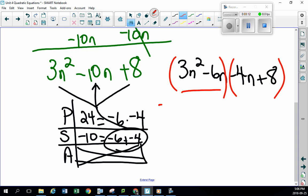Out of this group, we take out a 3n, leaving you with n minus 2. How beautiful is that? Out of this group, we take a minus 4 out, leaving in with n minus 2 again.